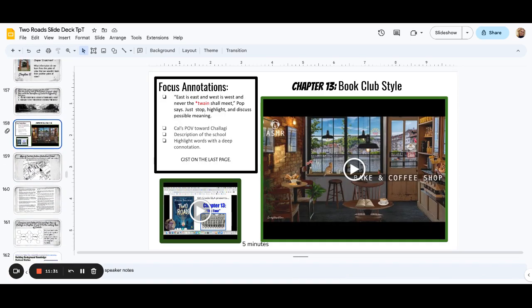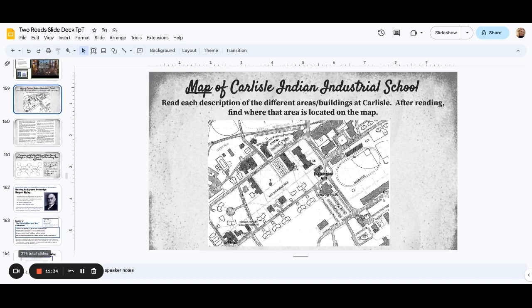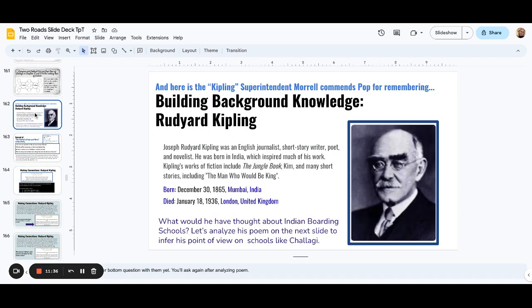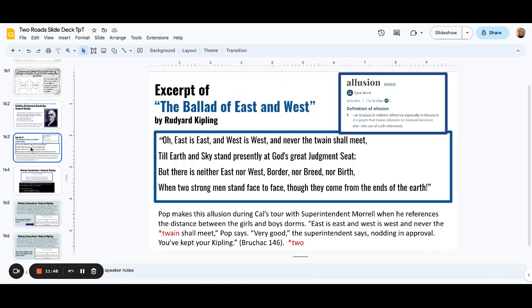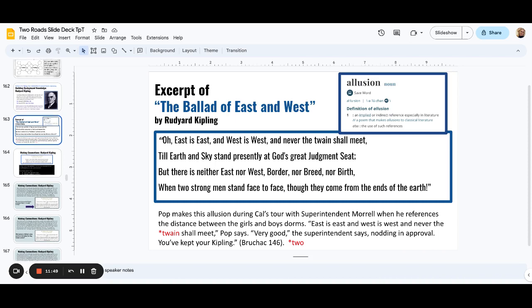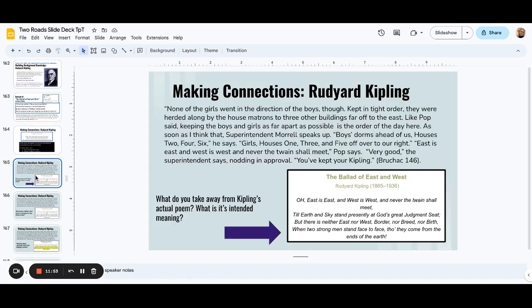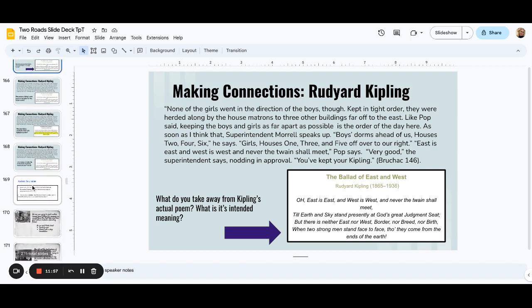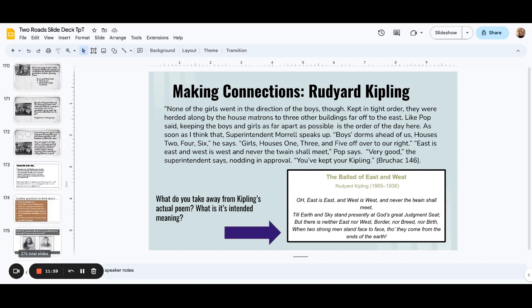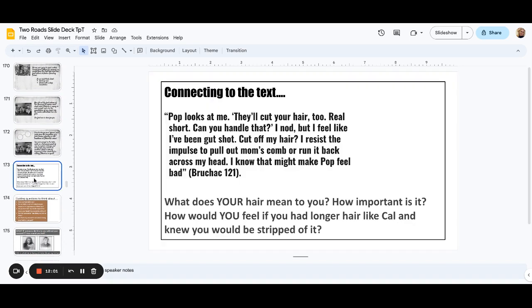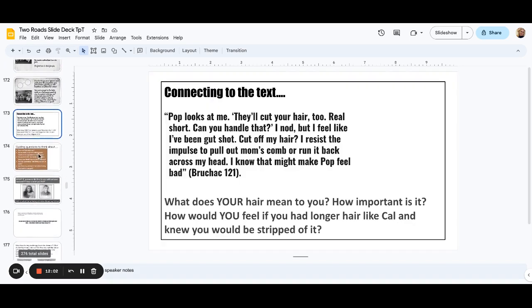Here's a map of what the Carlisle school, this is actually where Captain Pratt was. Here is a lesson on Rudyard Kipling, who wrote the Jungle Book. He wrote a poem that's an allusion in Two Roads. And so it's a little mini lesson on why Joseph Bruchak would choose to put this into his book and making all kinds of connections with academic conversation. My school's very big on academic conversation, so it's everywhere. And then looking at quotes, analyzing quotes.